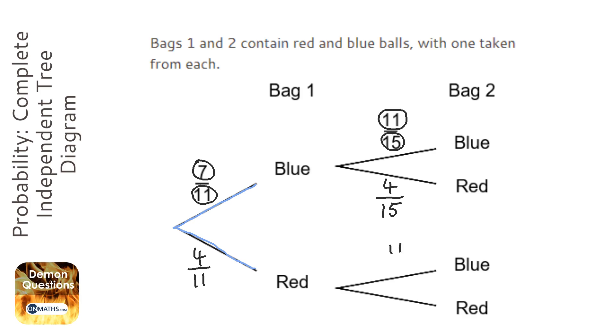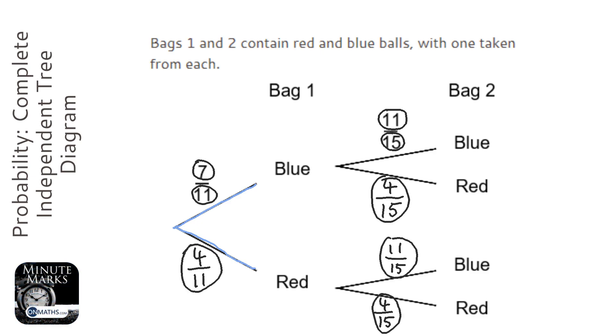At the top it'll be 11 over 15, at the bottom as well, and therefore the probability of picking a red will still be four over 15. Now, you need to have all of these fractions in there - you don't need to circle them, but you have to have them all in there to get all the marks.